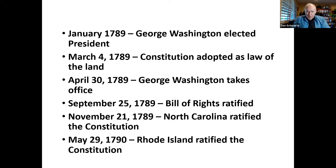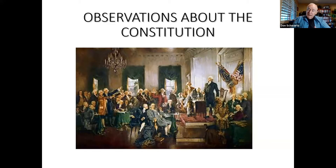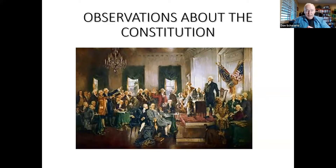Before looking at the powers given to the legislative and executive branches, some observations about the Constitution are worth noting. Because the delegates disobeyed their state legislatures by not just amending the Articles of Confederation but getting rid of it entirely, the Constitutional Convention was in effect a bloodless coup d'état — an overthrow of the existing government. But no one at Philadelphia knew how it would turn out.